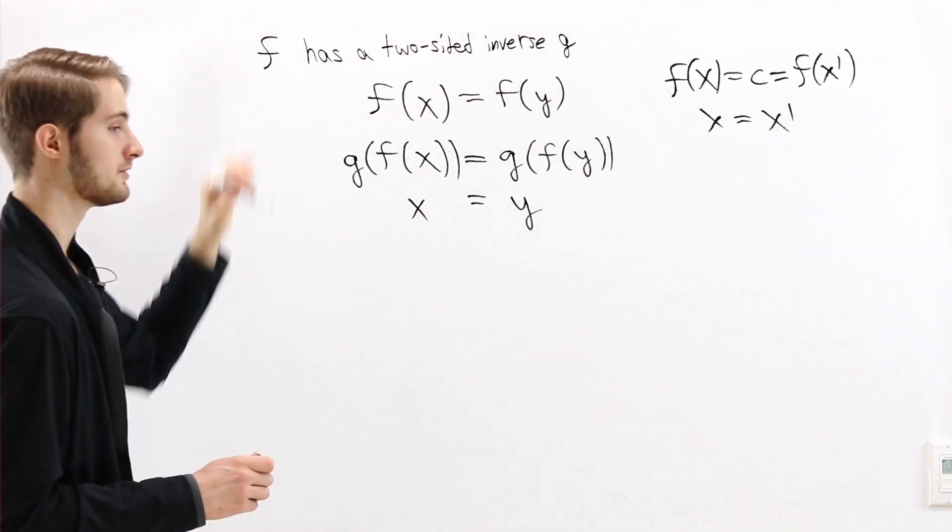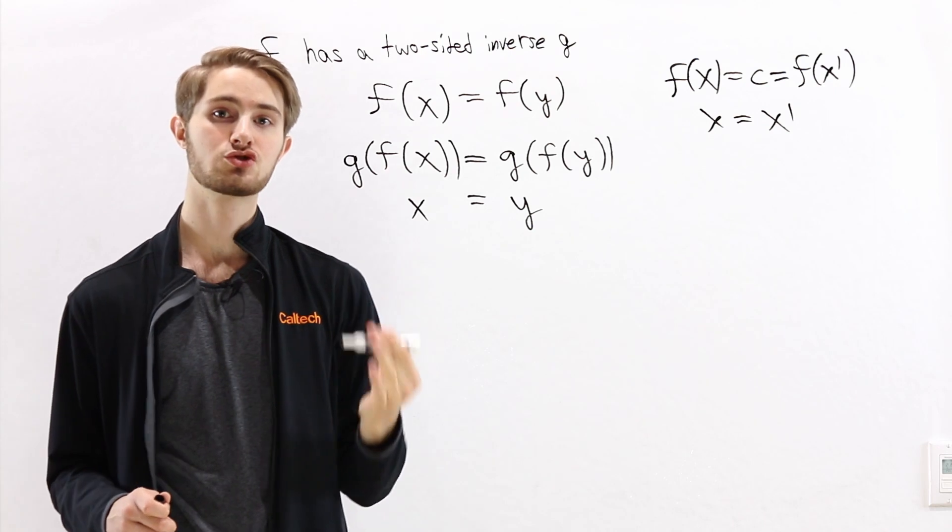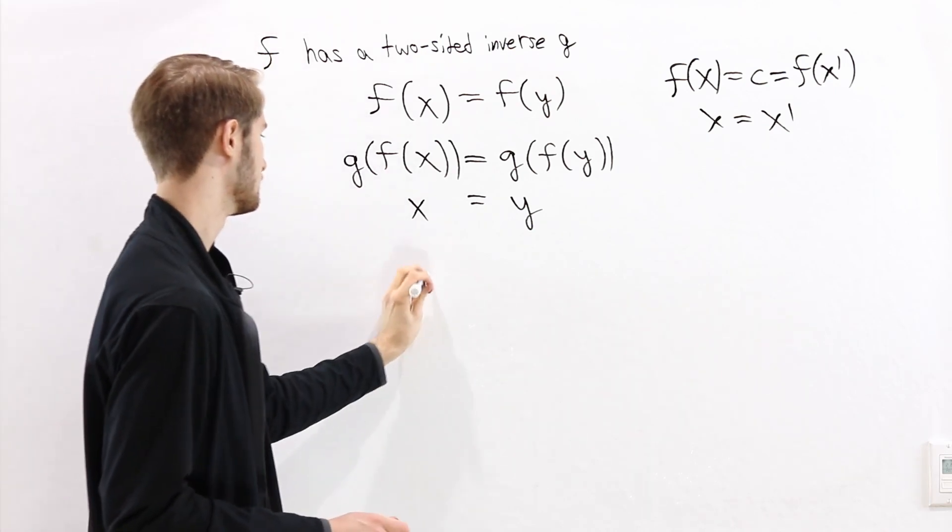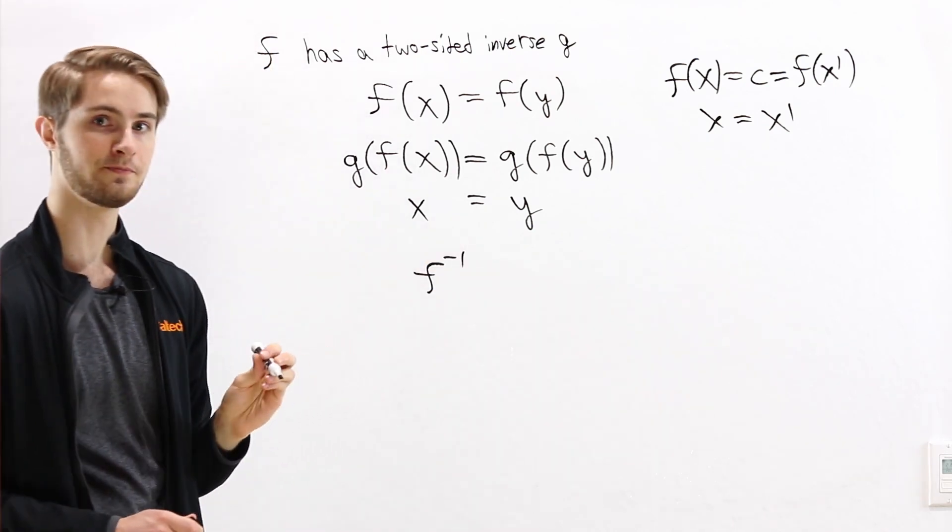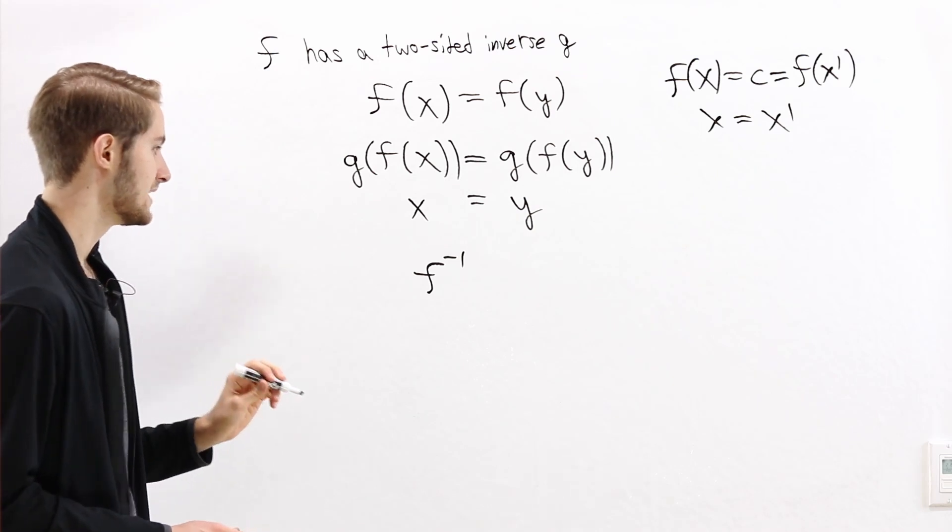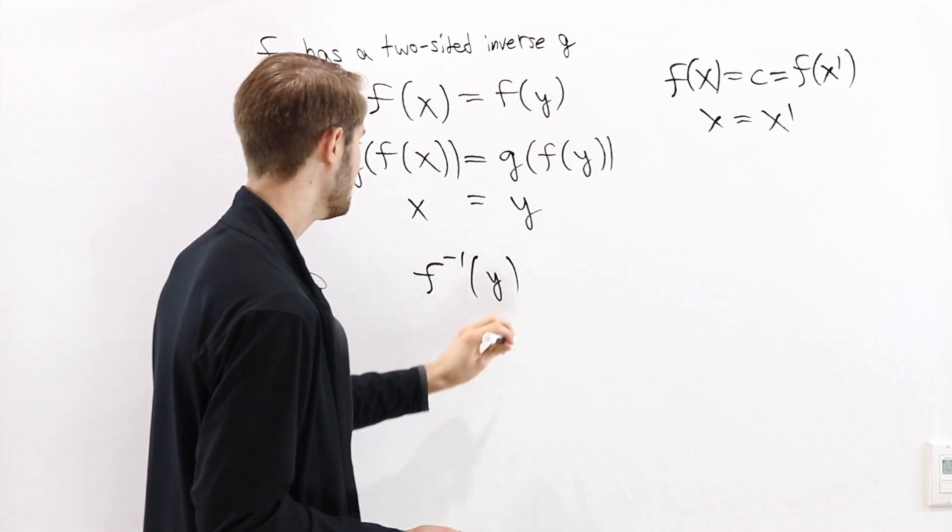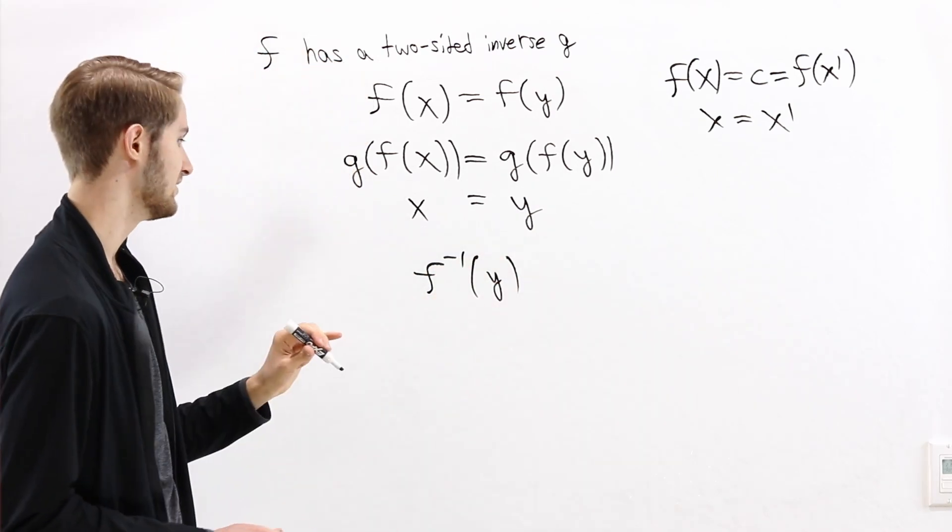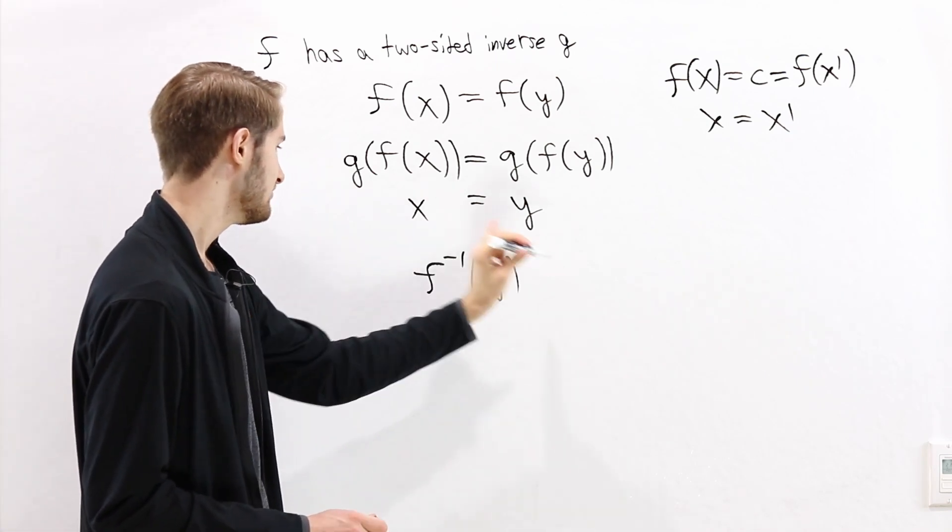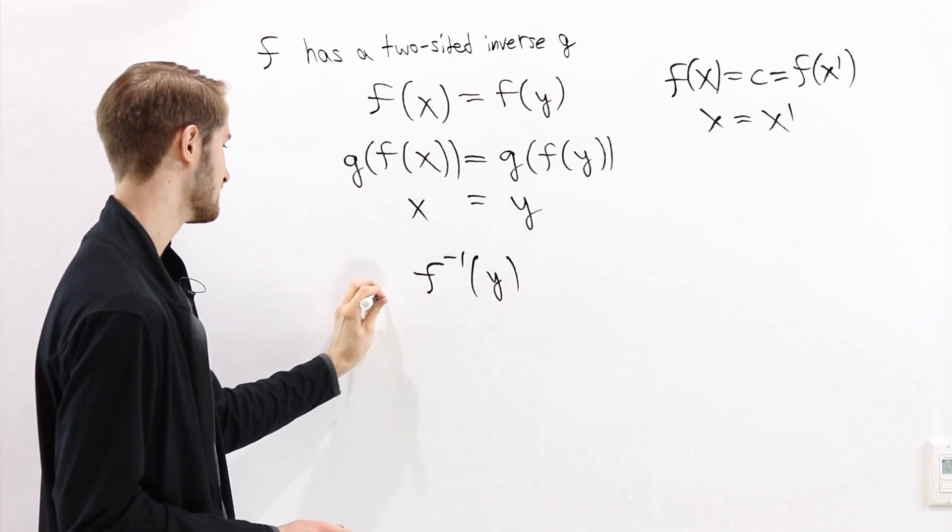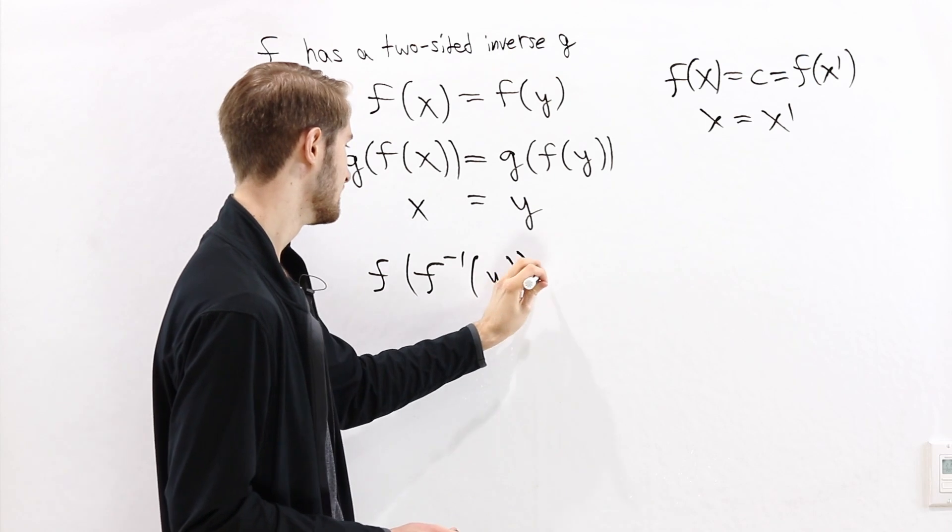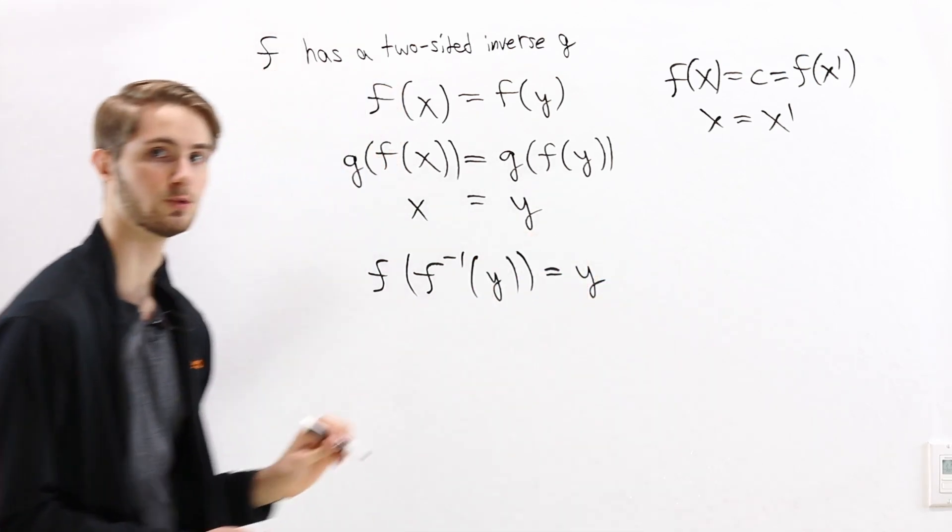Now let's suppose that we start with our function f, and we want to construct a right inverse, which we'll call f to the negative one. The definition of a right inverse is that any time we take some value in the codomain of f, the output f inverse of y has to satisfy the equation f of f inverse of y equals y.